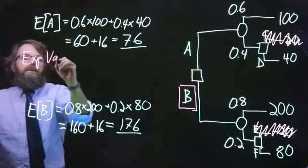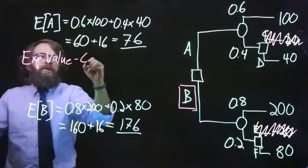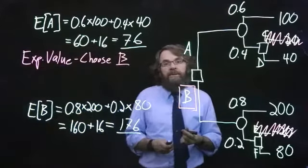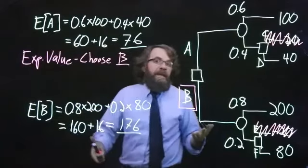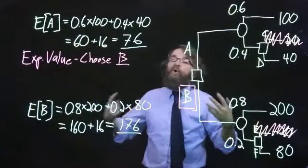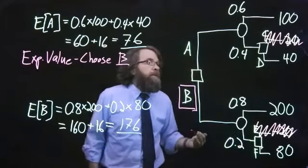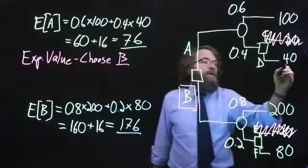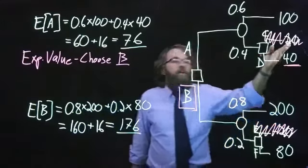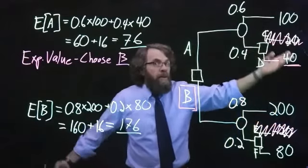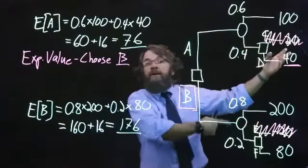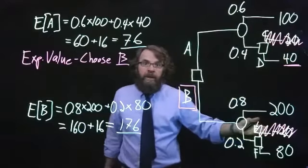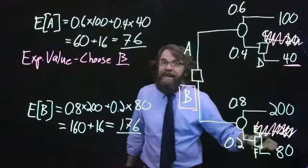Now the other way we could look at the simple decision tree is to look at the worst case scenario. If things do not go well, what is the worst outcome that we might experience? With option A, the worst thing that we could realistically see is we could make $40,000. This $20,000 option would never happen because we would never choose it when we had the opportunity to choose $40,000 instead. Similarly, with B, we would never choose to lose $20,000. We would always choose to make $80,000 instead.